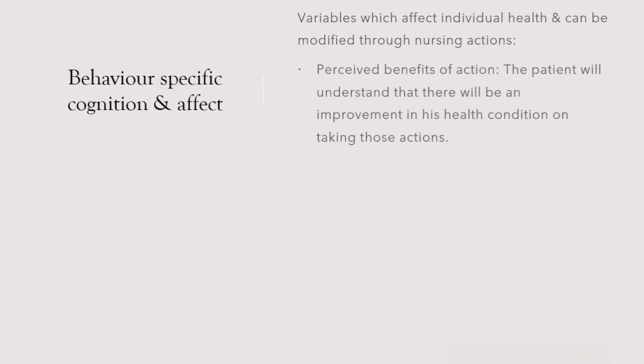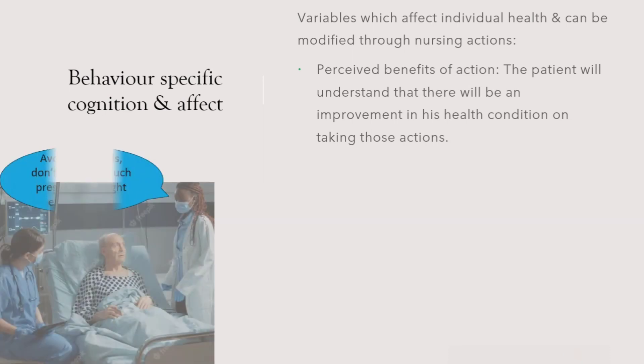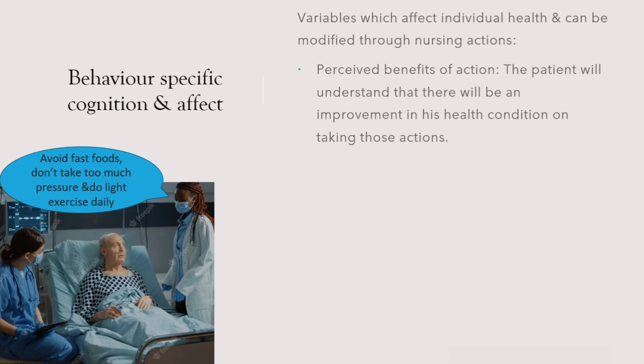The next part is behavior-specific cognition and effect. Specific to individual behaviors, there are variables which affect their health, and those variables can be modified through nursing actions. The first one is perceived benefits of action. For example, we are advising a person who has already had a heart attack — to avoid fast foods, not to take too much pressure, do light exercise daily, etc. The patient will understand there will be an improvement in his health on taking those preventive measures — that is the perceived benefit, and probably he will not have to suffer another heart attack.